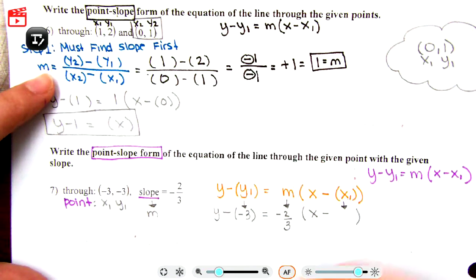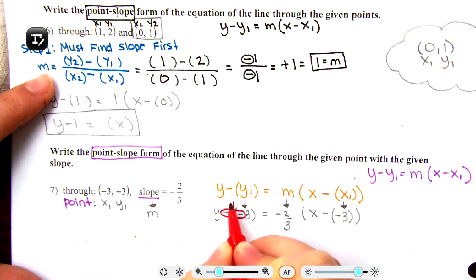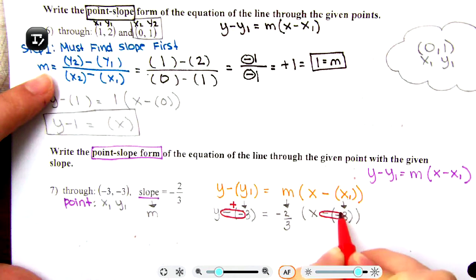Immediately I'm noticing things that are making me happy because I see two negatives. Two negatives make a positive. Same thing here, two negatives make a positive.